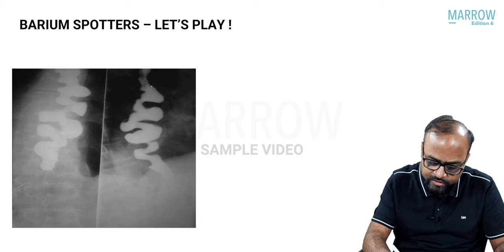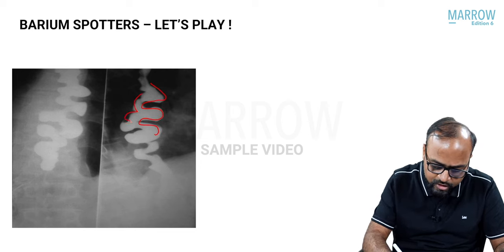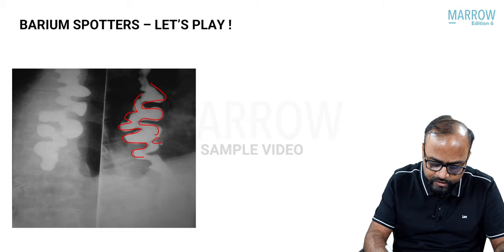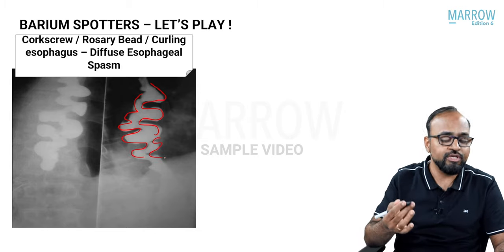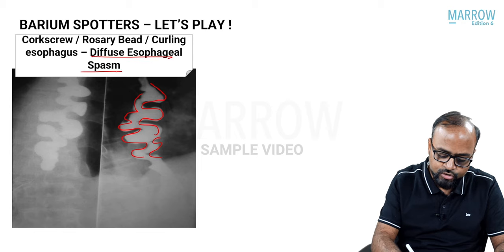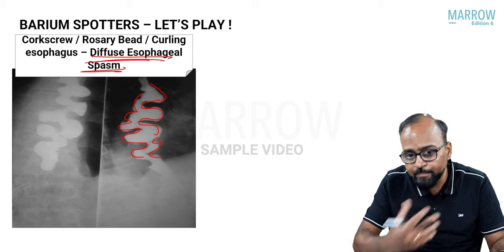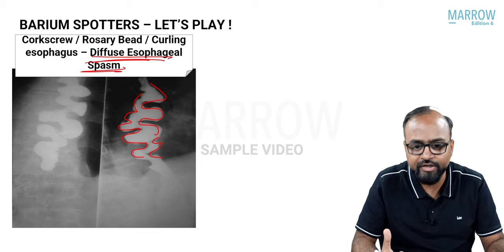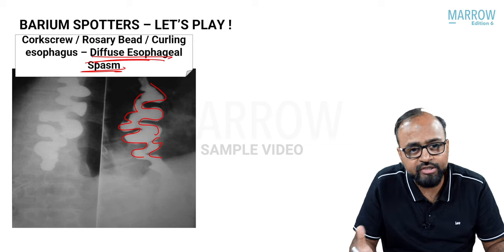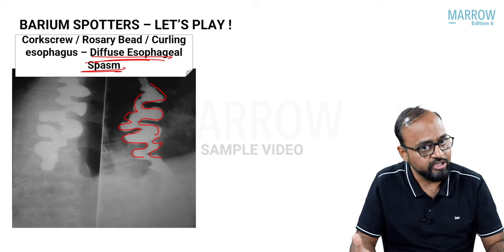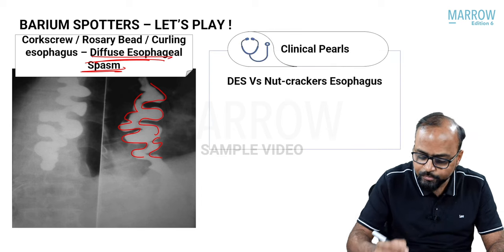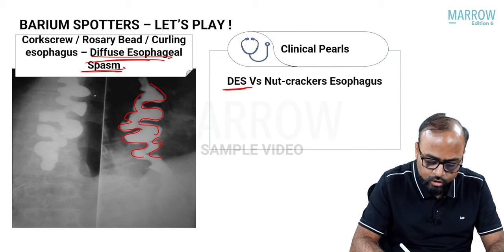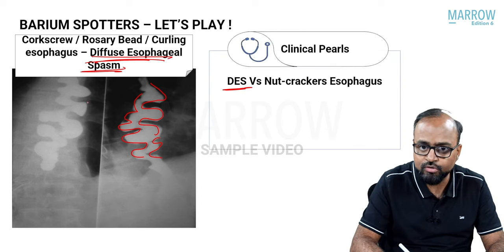This typical appearance of the esophagus is called the corkscrew esophagus, or curling esophagus, or rosary bead esophagus, seen in diffuse esophageal spasm — a very painful condition with involuntary uncoordinated contractions of the esophagus giving rise to this particular appearance on barium swallow.